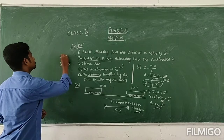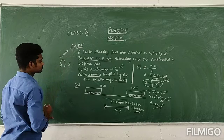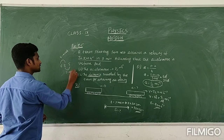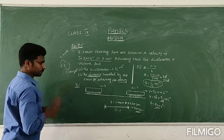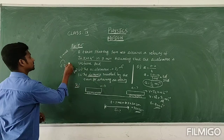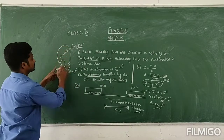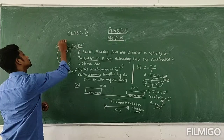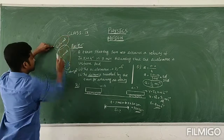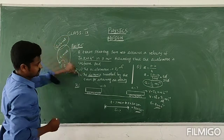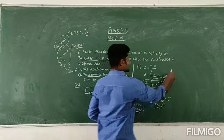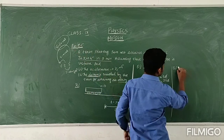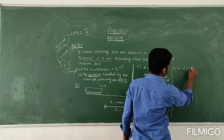But here we need the position and velocity relationship. That is: v² = u² + 2as. This is the relationship between position and velocity. So I can use this third formula. v² = u² + 2as.